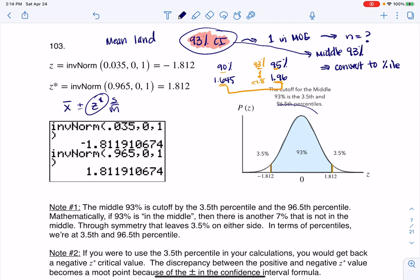So what I'm going to do is I'm going to draw my sampling distribution, or really the standard normal curve, I'll go ahead and just convert it to a z-score, and you can see that I've circled or I've highlighted the middle 93% of my sampling distribution.